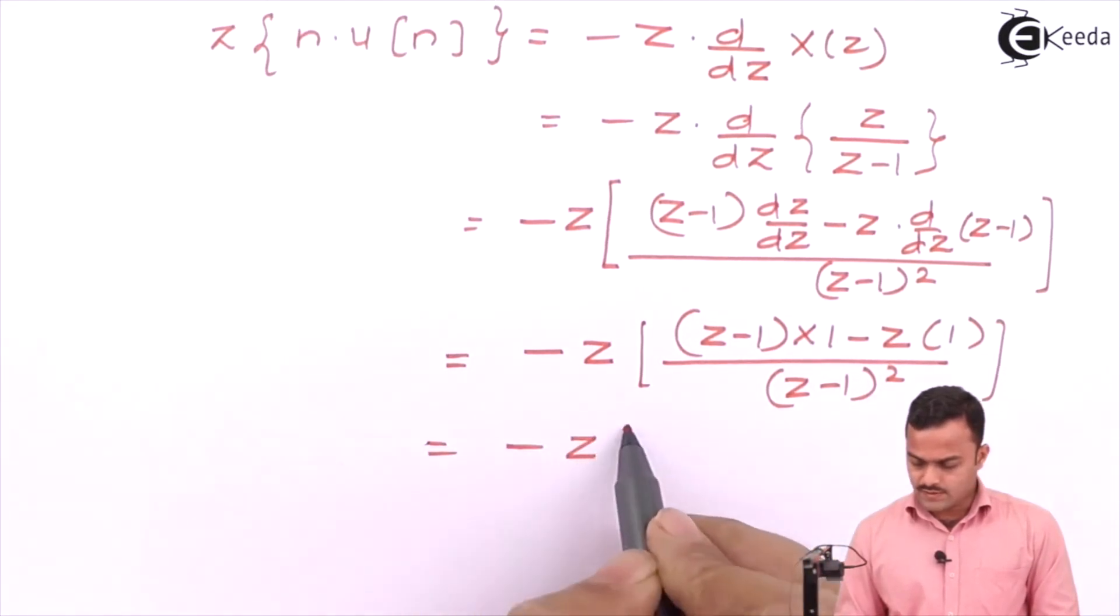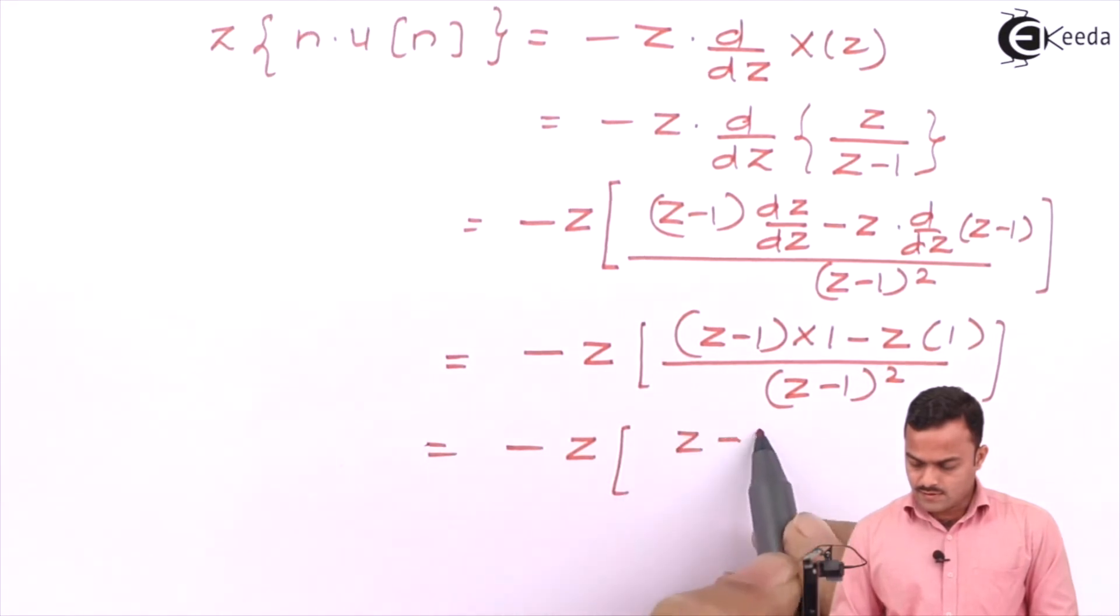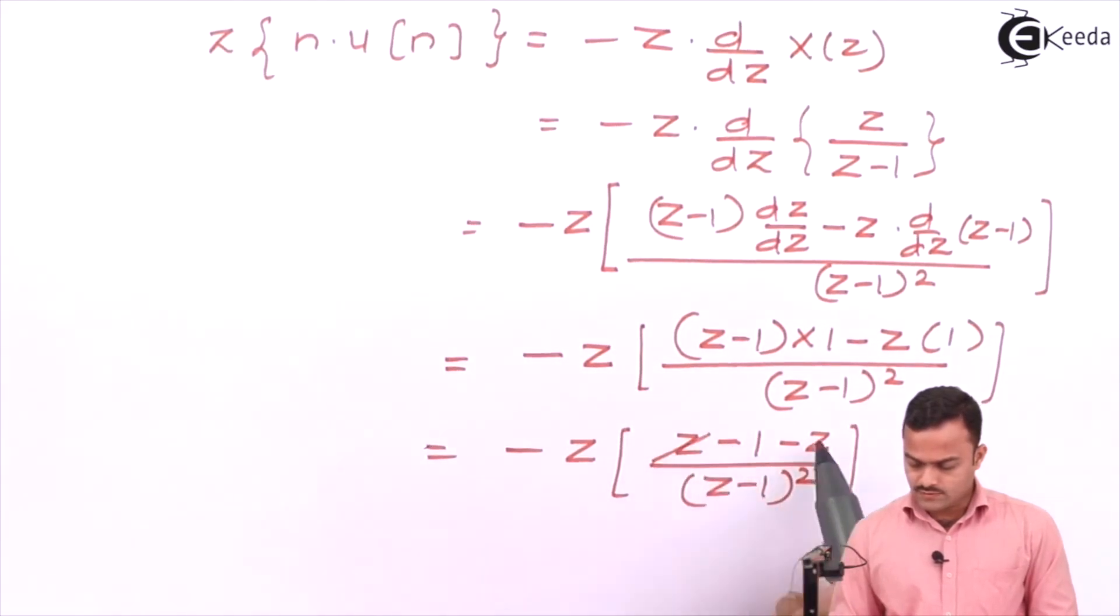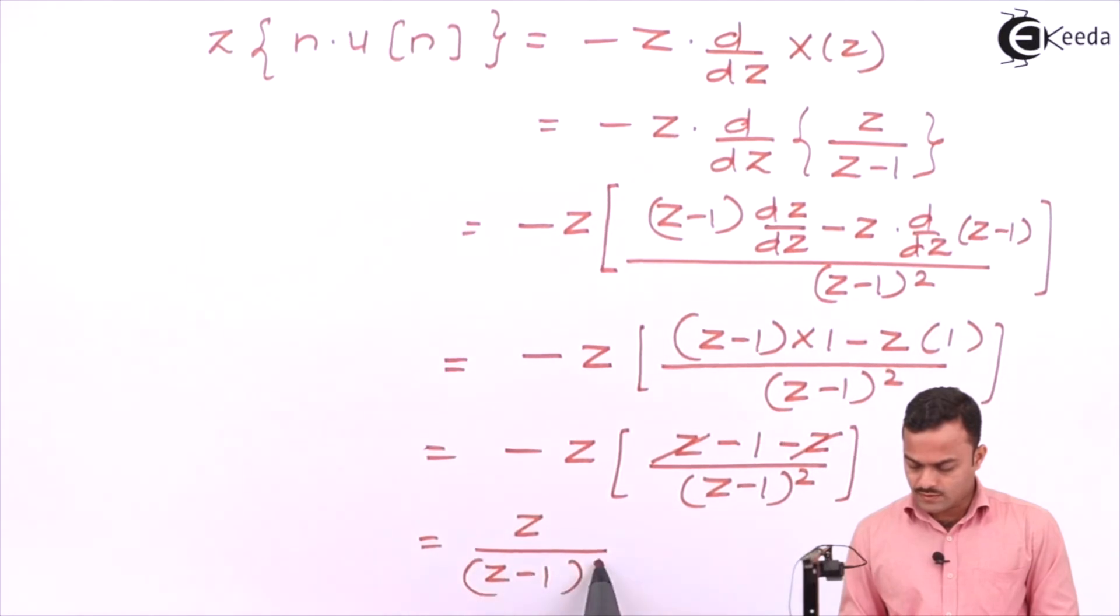Simplifying: minus z times [(z - 1) minus z] upon (z - 1) squared. So z is getting cancelled and in the end you will get z/(z - 1)^2.